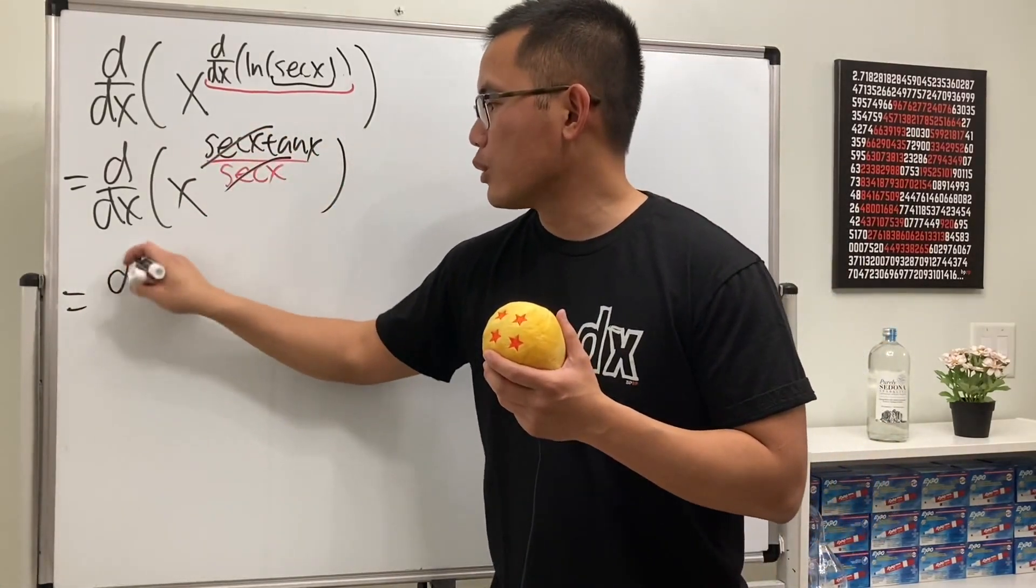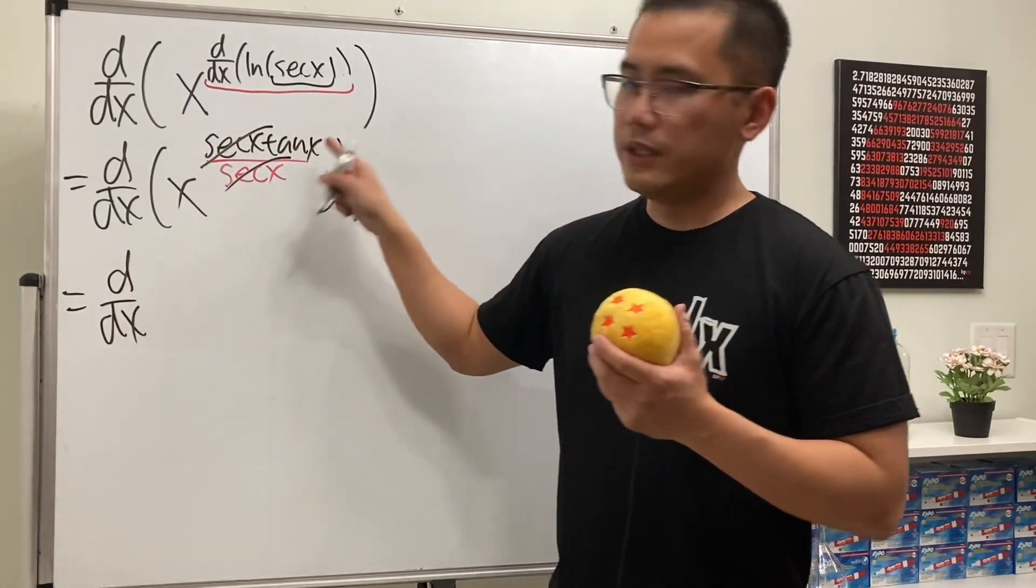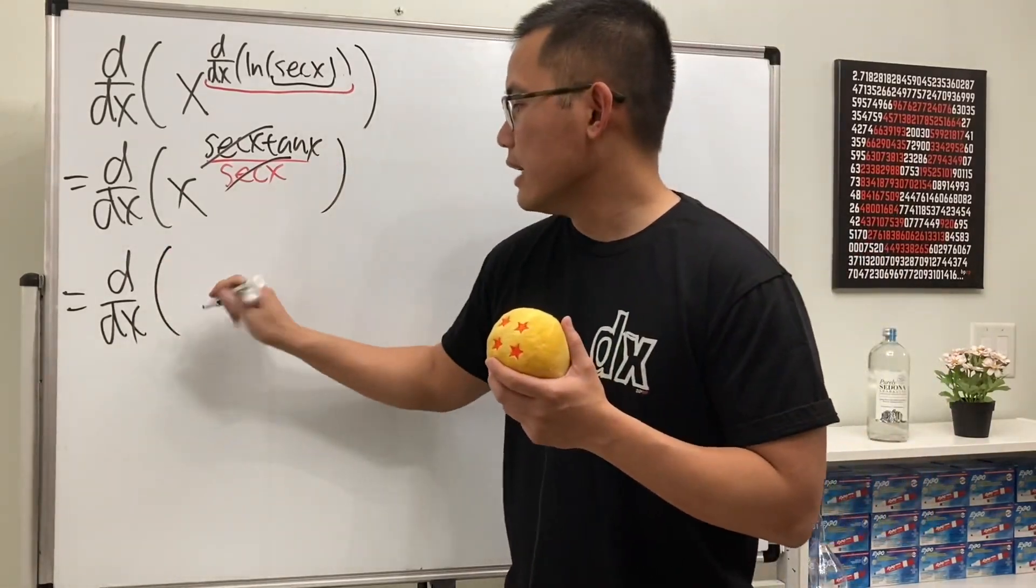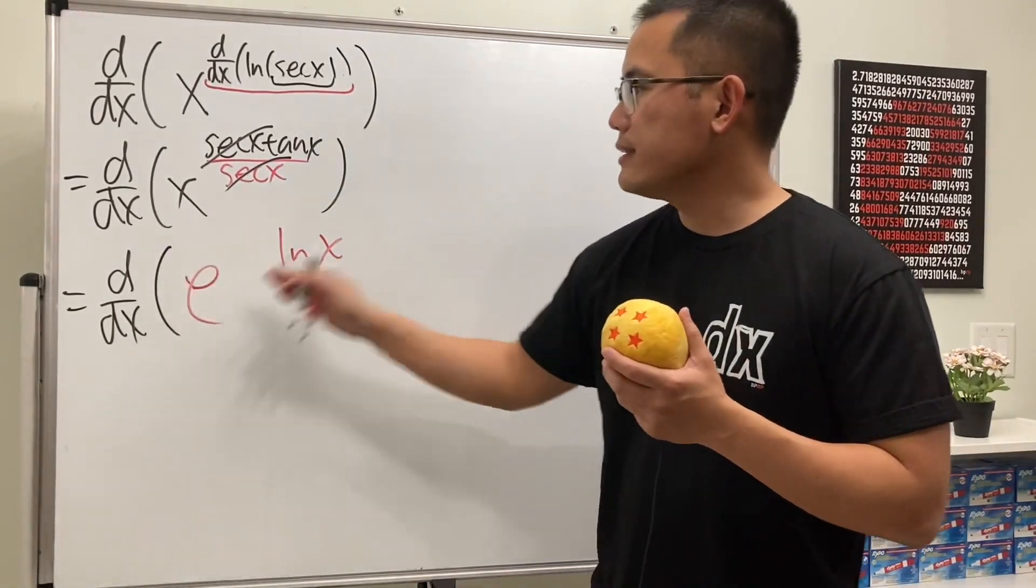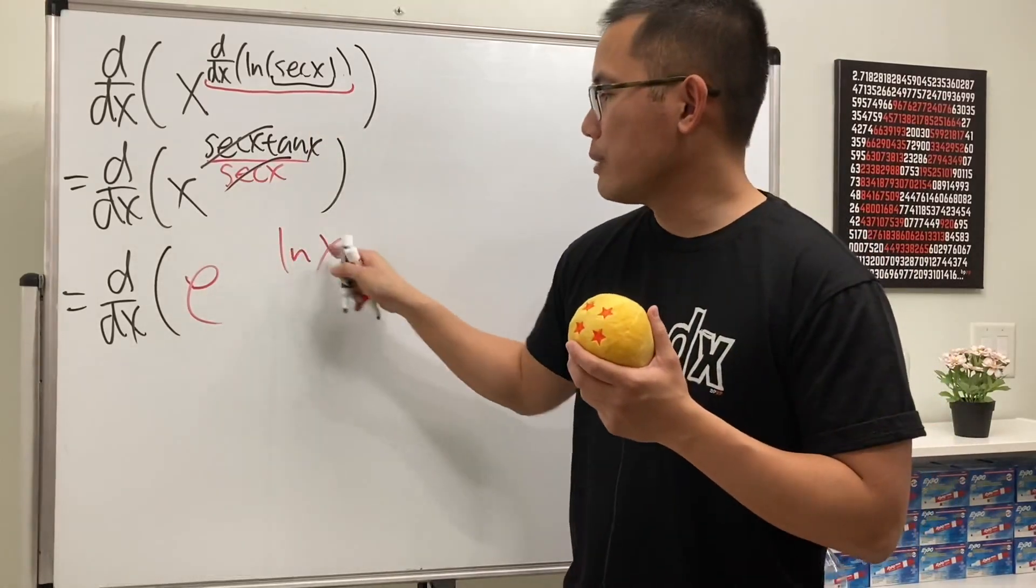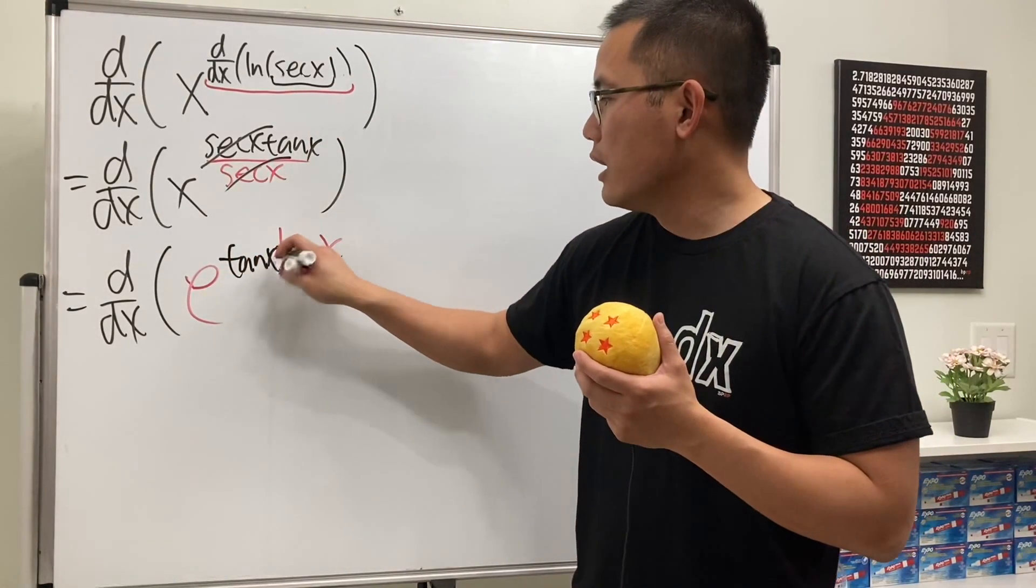So this is just going to be the derivative of x to the tangent x power, and then raise that to the tangent x power. So we can multiply this with tangent x right here. And now to differentiate this...